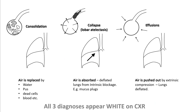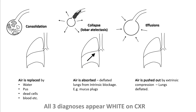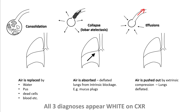A word about differentiating consolidation, collapse, and effusion — because all three appear white on chest x-ray. Consolidation occurs when air is replaced by water, pus, dead cells, or blood, so the alveoli retain their shape. In collapse, there is an obstruction leading to air being absorbed from the alveoli, so the alveoli are deflated and the lungs collapse towards the hilum. In effusions, there is extrinsic pressure on the alveoli, making the lung deflated and air is pushed out.